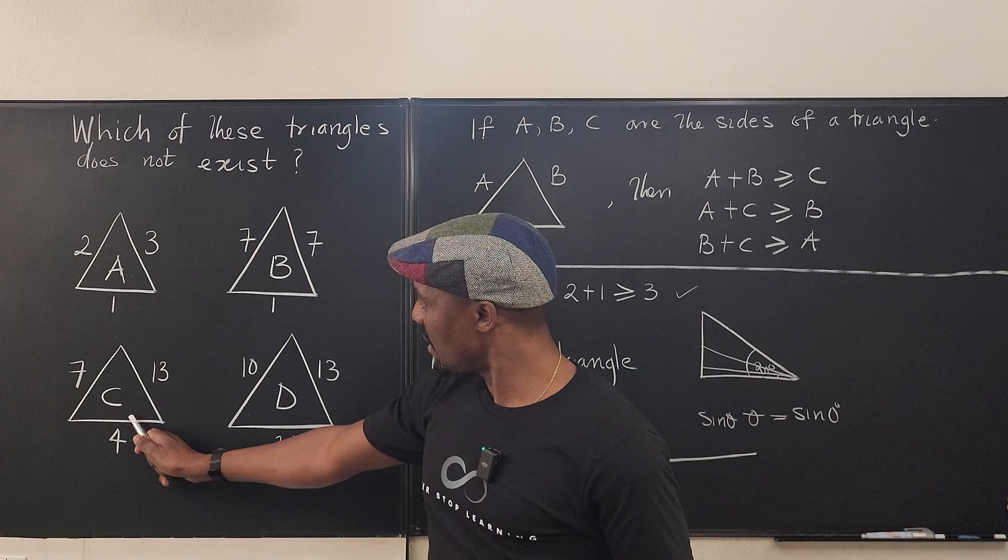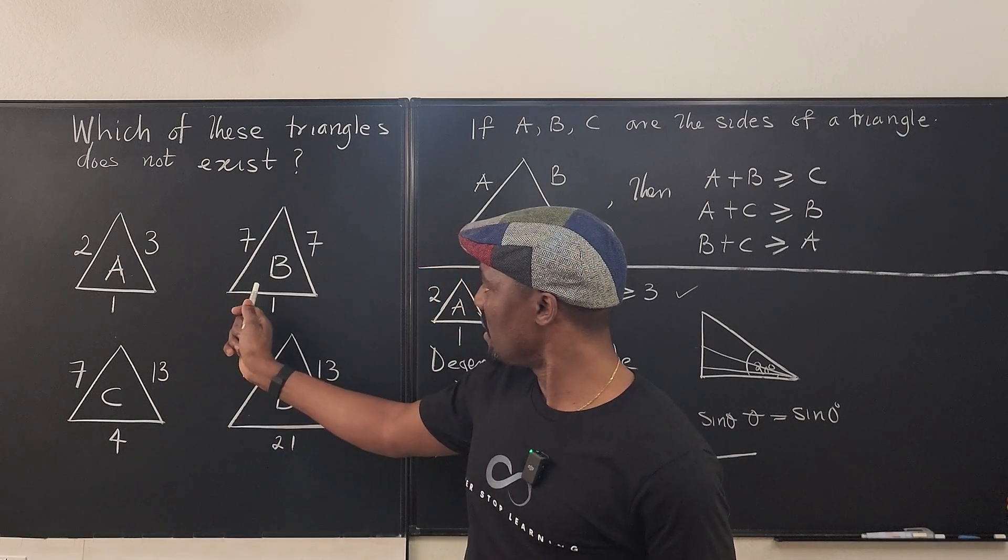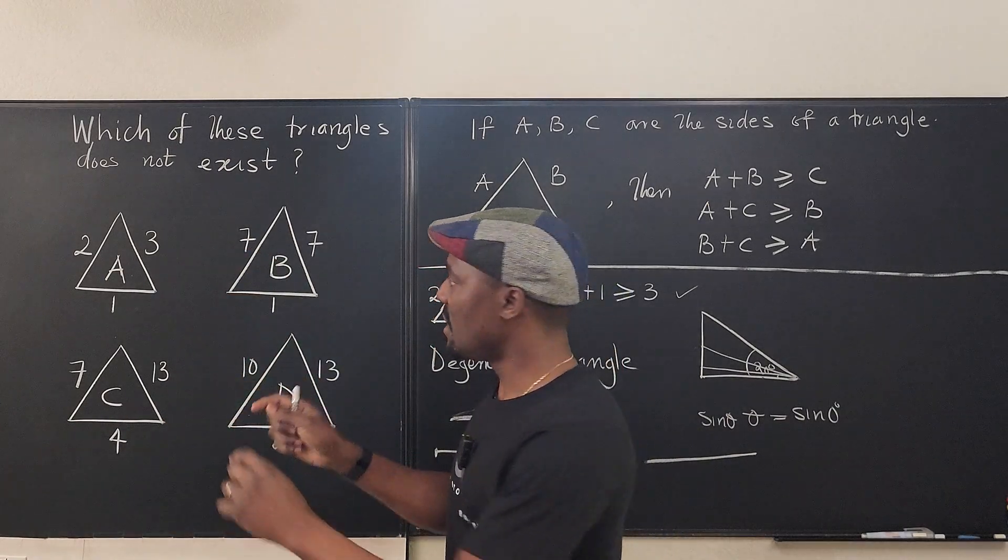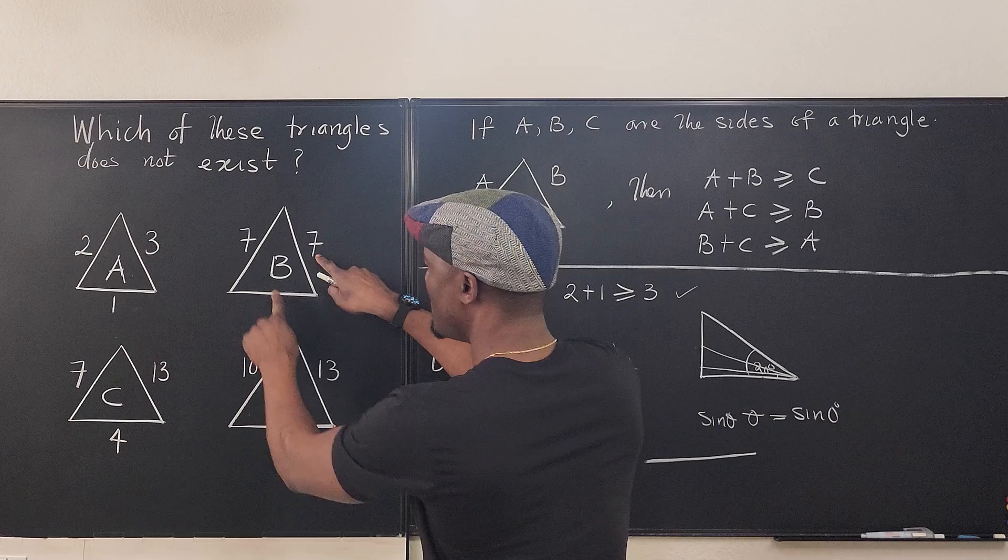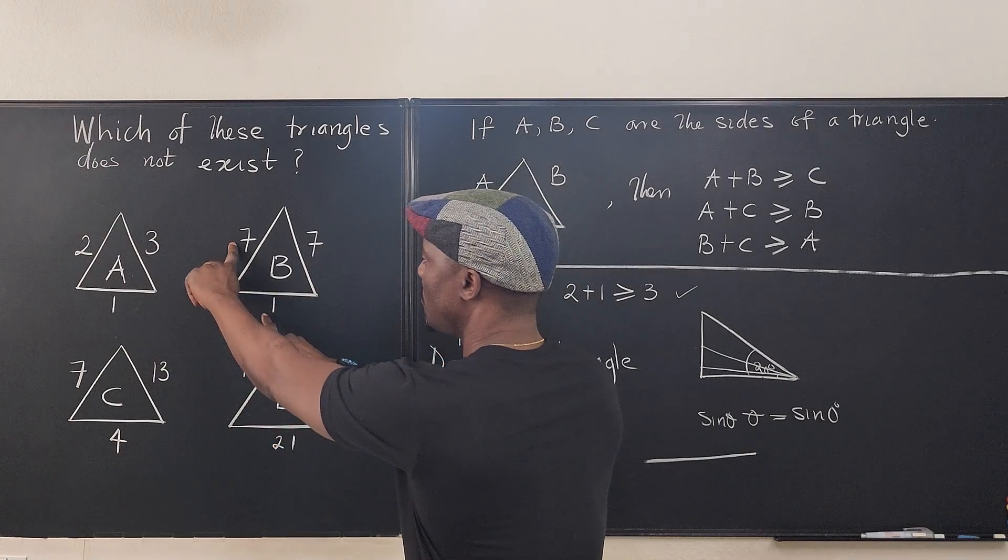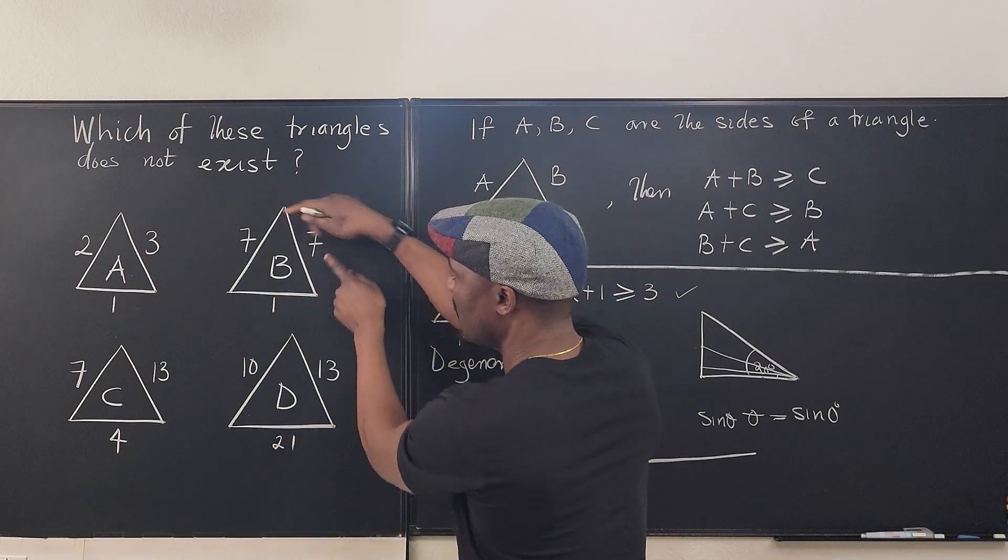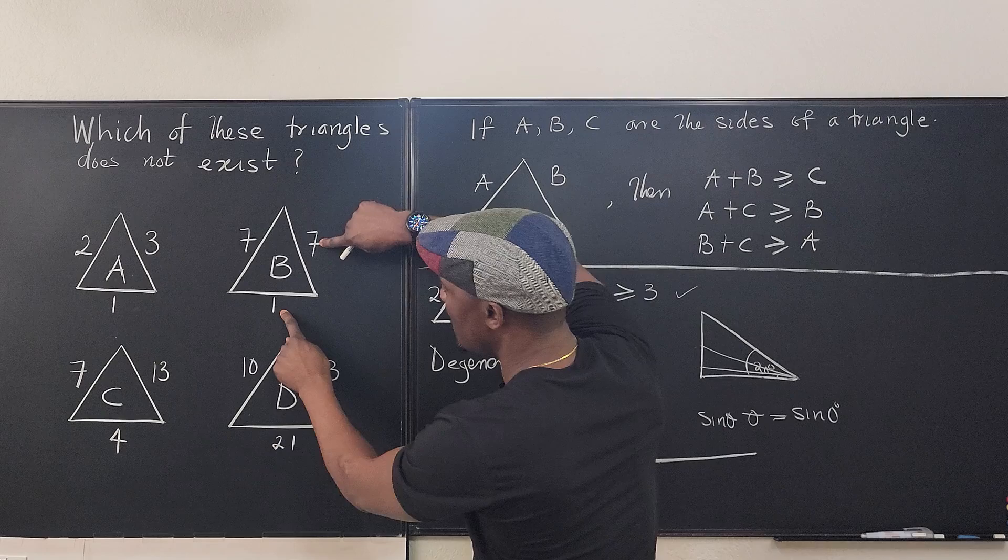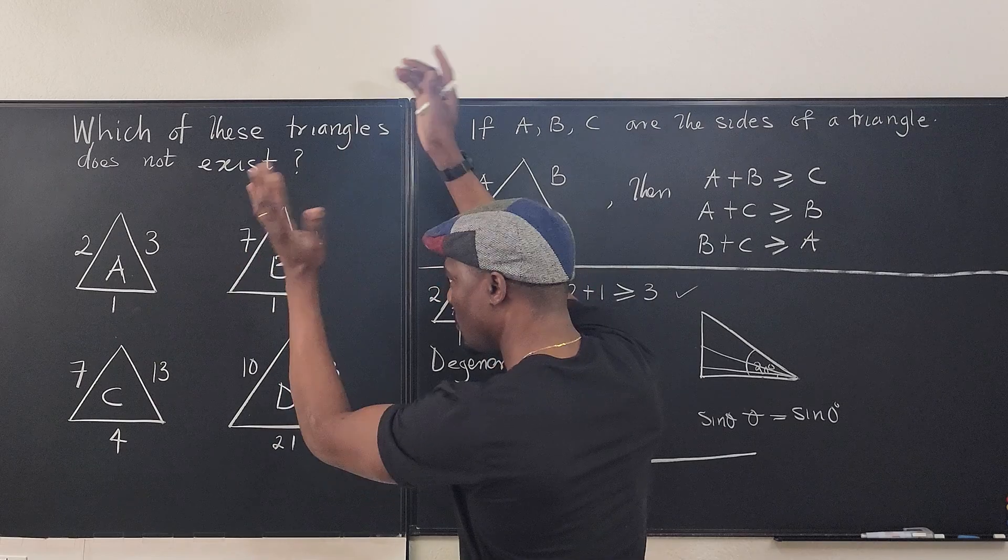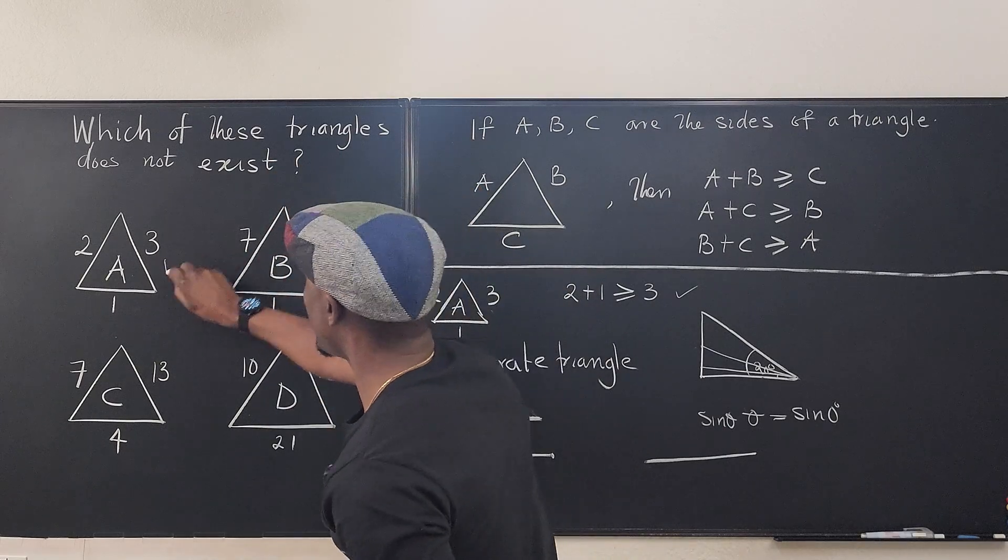Does this exist? C. We'll come back to it. Let's go to B. Well, if we look at B, the sum of these two is greater than one. The sum of these two is greater than seven because this is eight. And these two will be greater than seven. That's eight. So this check, check.